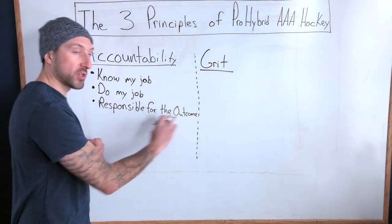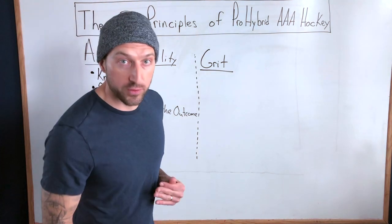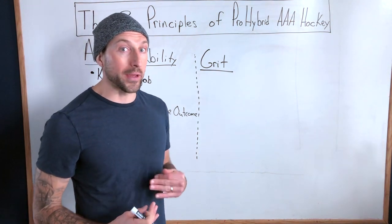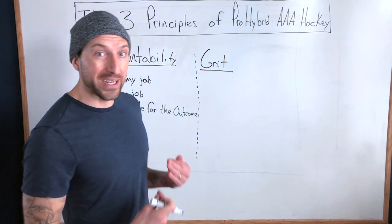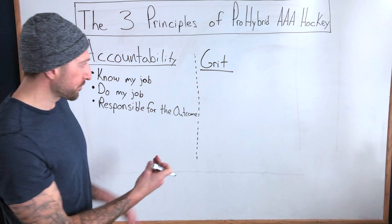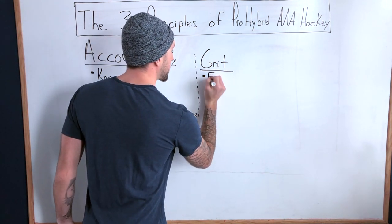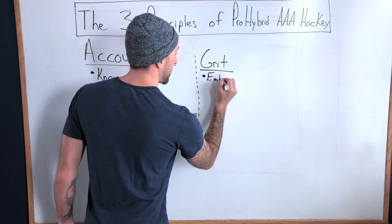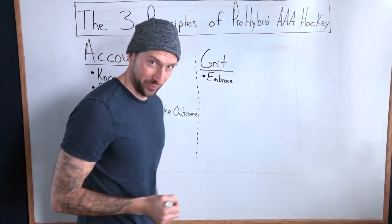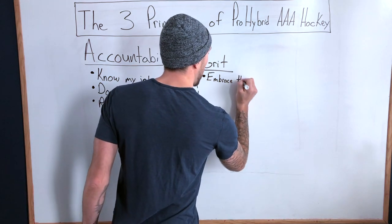So as we said, accountability is being responsible for the outcome. Now what happens when we're faced with the challenge? Or maybe things don't go the way we intended them to go. We need to have grit. So that's why grit goes with accountability. So grit, like we said, is embracing. I love this word, guys. Let's see how many times we can use that word today. Embrace the challenge.